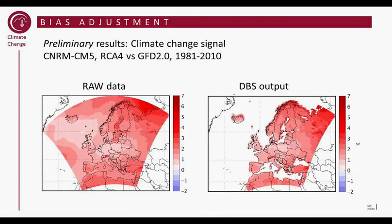The last slide shows the climate change signal. These are two periods: one period in the future compared to the historical period, which is 1981 to 2010, and the future period is 2071 to 2100. What this shows is that we don't want to change the climate signal when we do the bias adjustment, and this plot shows that it hasn't interfered very much in the climate change signal, which is good.